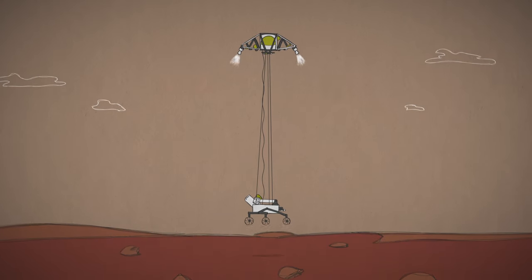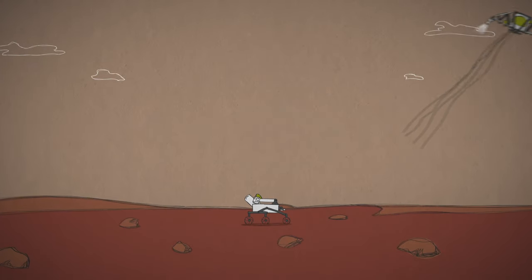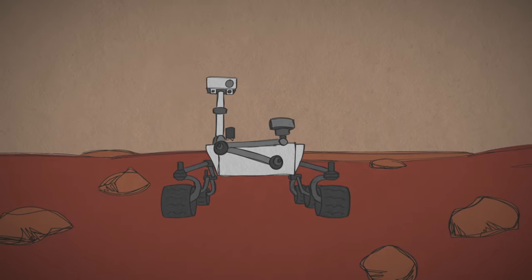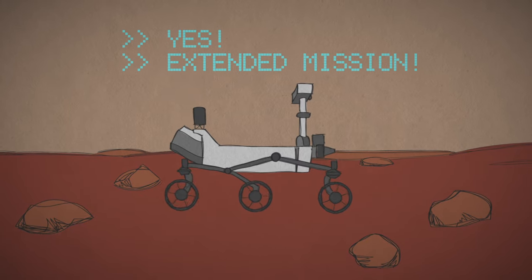When the Curiosity rover got to Mars, its mission was to explore Mars for at least 687 Earth days, one Mars year. But like our other long-lasting rovers, it hit its target and kept on rolling.